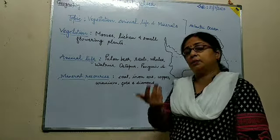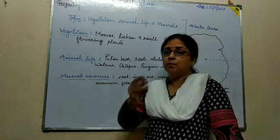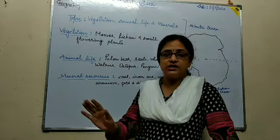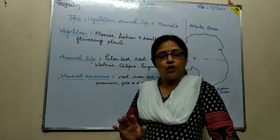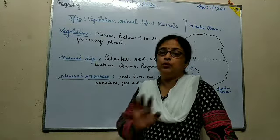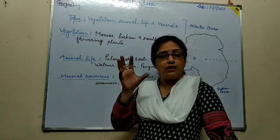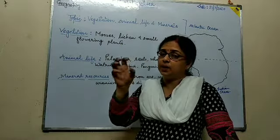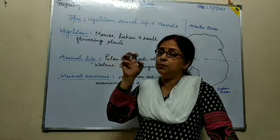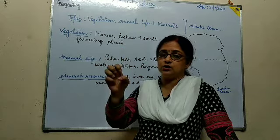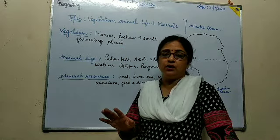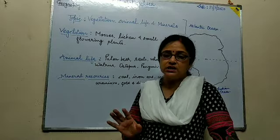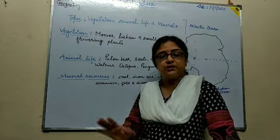Plants can grow by the dispersal of seeds by various agents such as wind and water. Here no water is present, and whatever moisture or humidity is present in the atmosphere becomes frozen. So it is very difficult for the dispersal or distribution of any seeds or plant species.